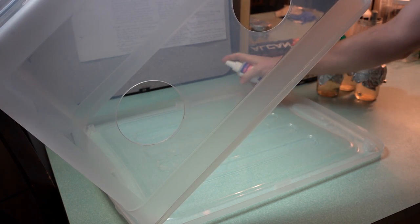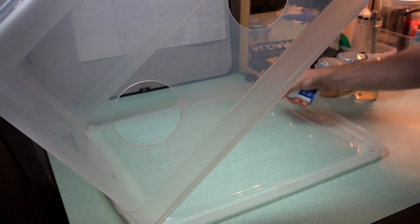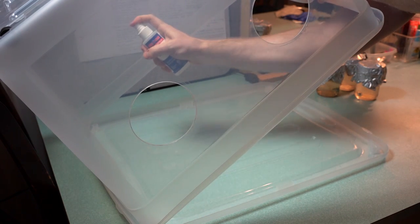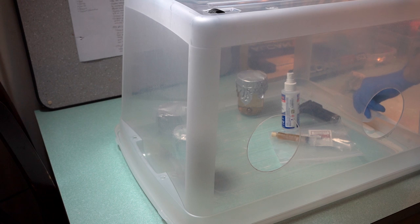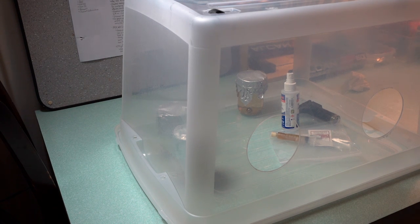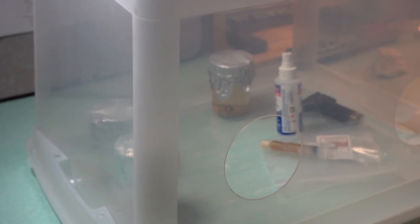To decontaminate the inside of the still air box I'm using a 10% bleach solution that is inside of an alcohol bottle. Wait a few minutes after placing your materials in the box and closing the lid to let the air settle.